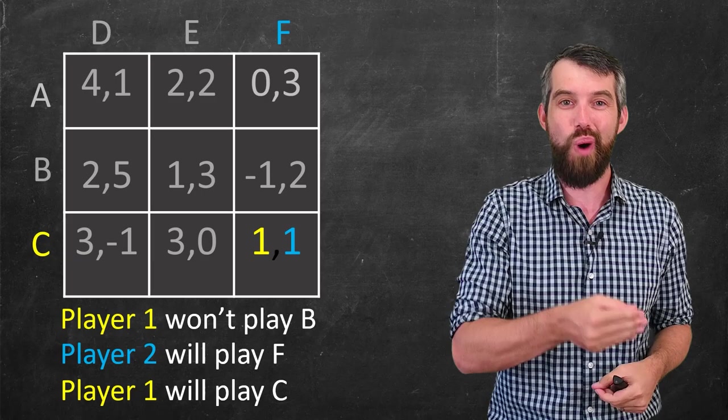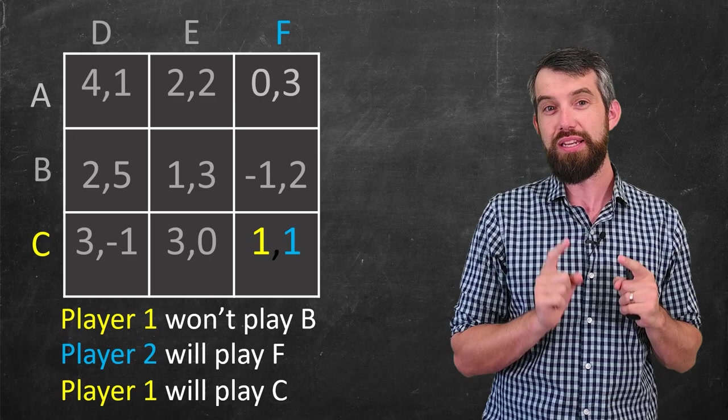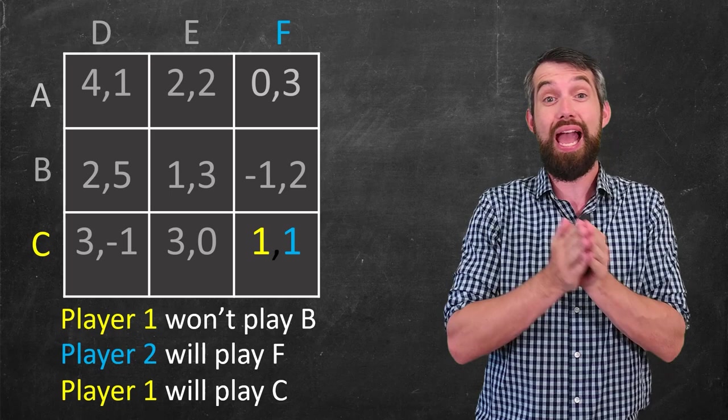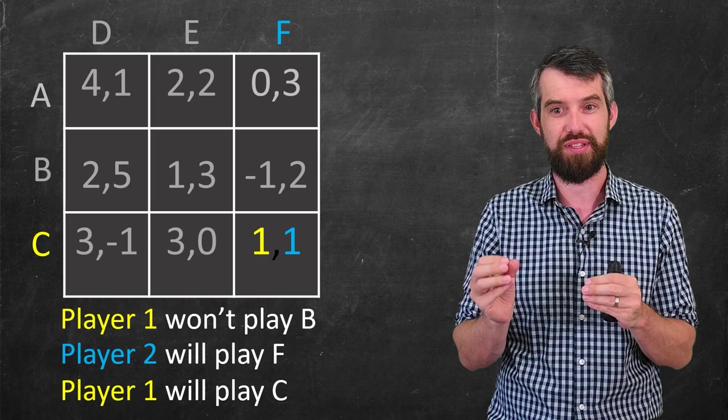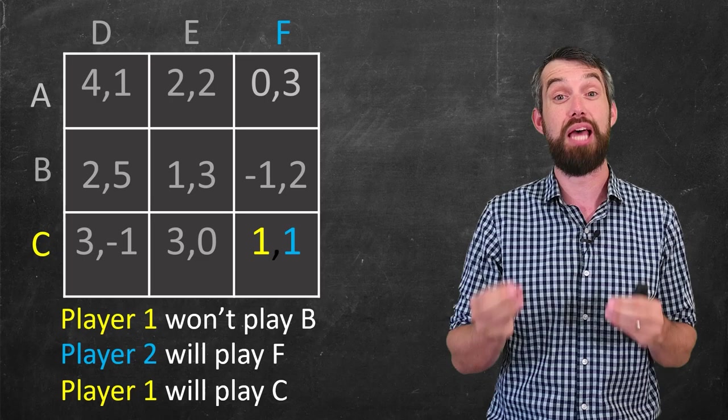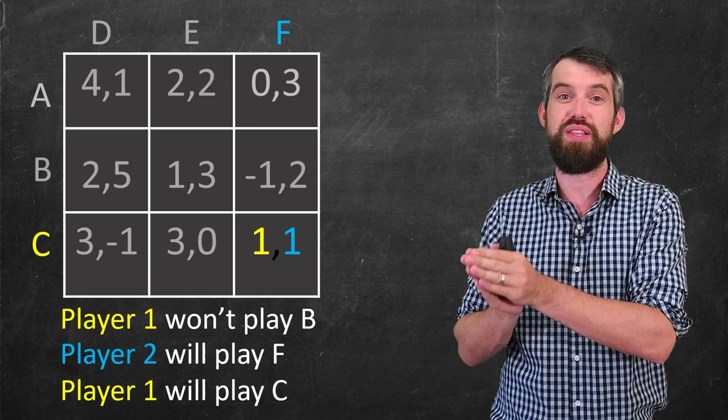And the key difference here is that there's a certain sense of stability. When you make this choice of C and F, neither player can move unilaterally to improve themselves. And as a result, this method of eliminating these dominating strategies is going to lead to a certain type of equilibrium. And exactly what that means is going to be the subject of the next video in this series, where we start talking finally about the idea of a Nash equilibrium.